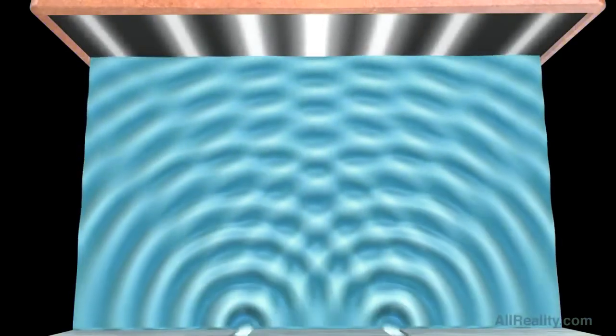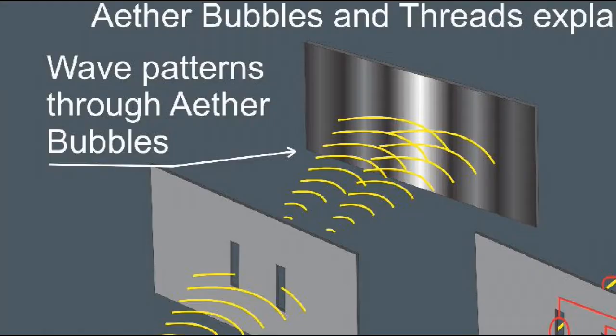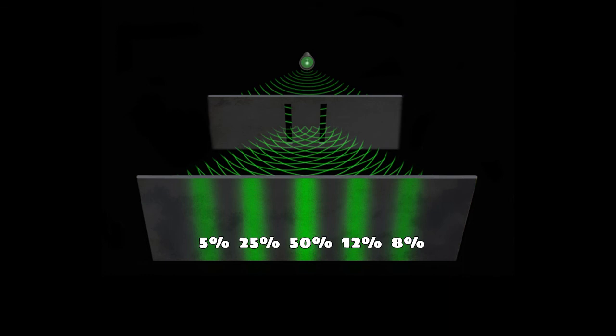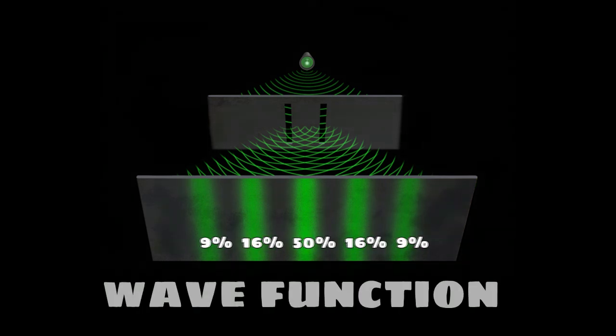But according to the math, things get even stranger. The unmeasured particle, functioning like a wave, is not 100% in any one place, but rather, it exists only as a probability wave. In other words, it exists only as a certain probability in multiple places, with the combined sum of all possible locations, or outcomes, being 100%. This is called a wave function.